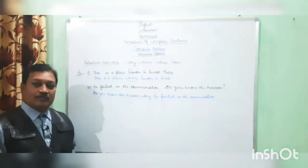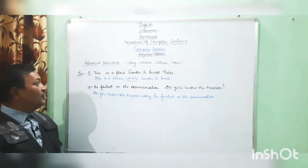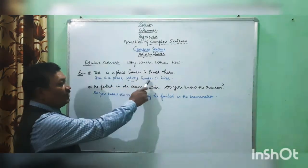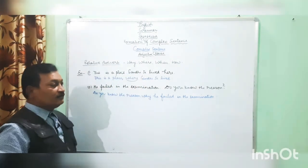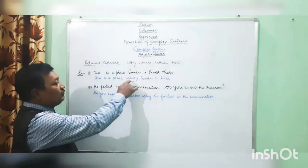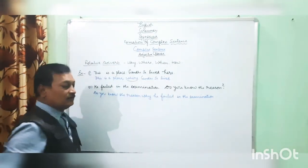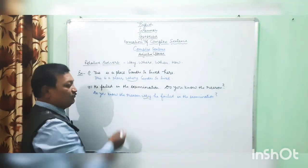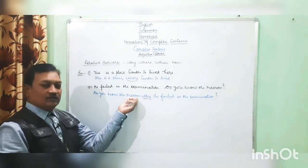Let's see some examples of relative adverbs — how we use them to combine two simple sentences into a complex one. Example 1: 'This is a place. Gandhiji lived here.' Combined: 'This is a place where Gandhiji lived.' Here 'where' is a relative adverb because it qualifies 'place', which is a noun. Example 2: 'He failed in the examination. Do you know the reason?' Combined: 'Do you know the reason why he failed in the examination?' Here 'why' is used as a relative adverb and the subordinate clause qualifies 'reason', which is a noun.